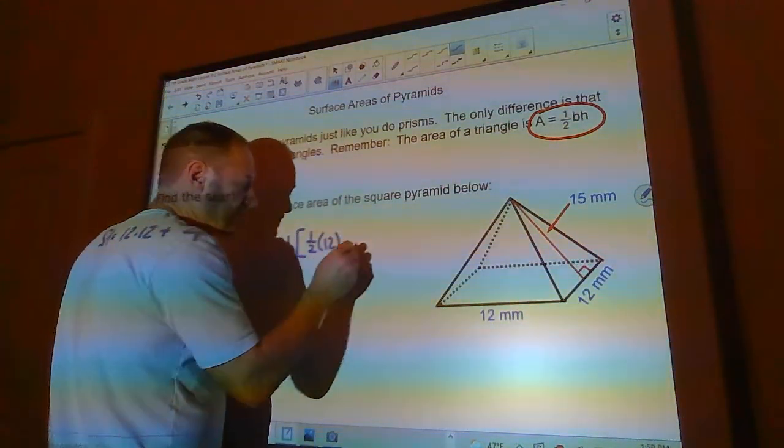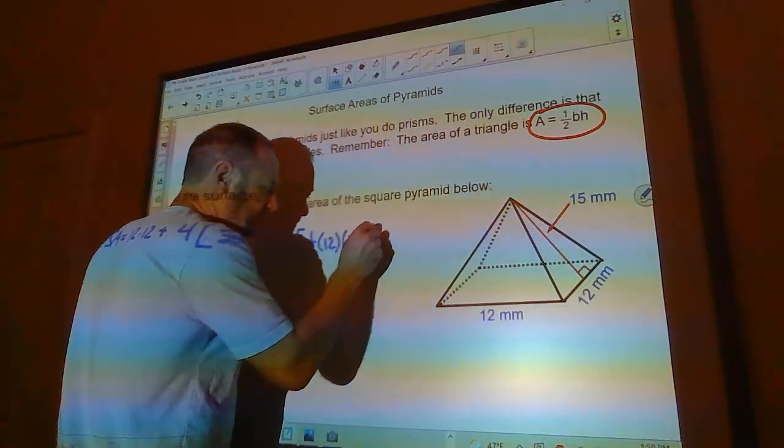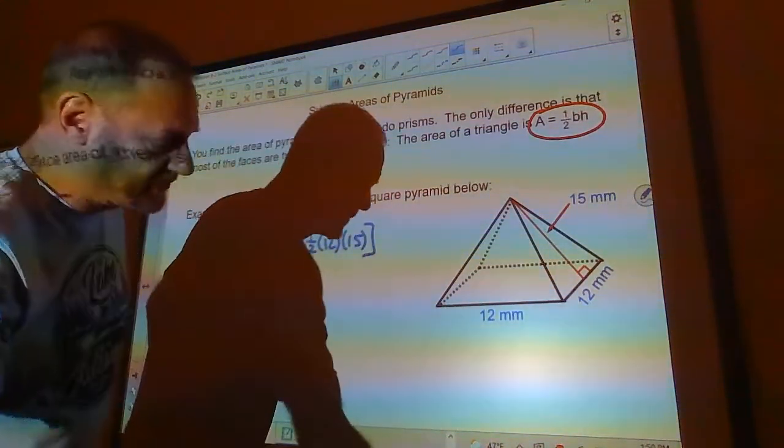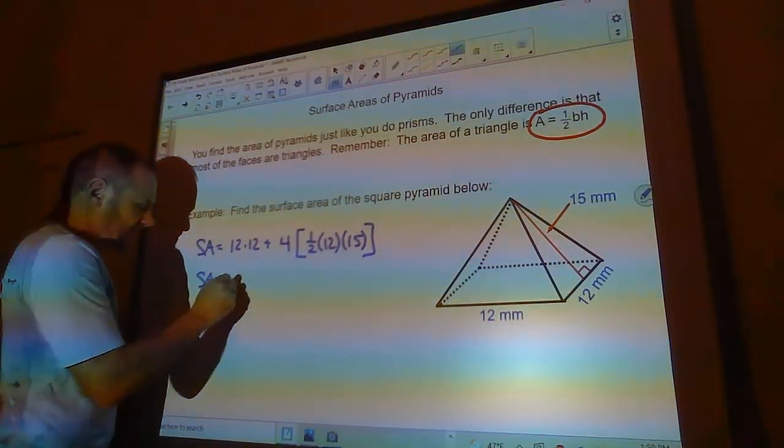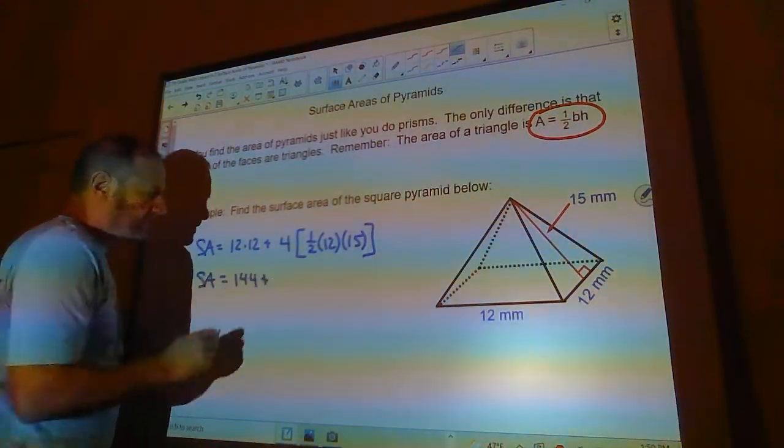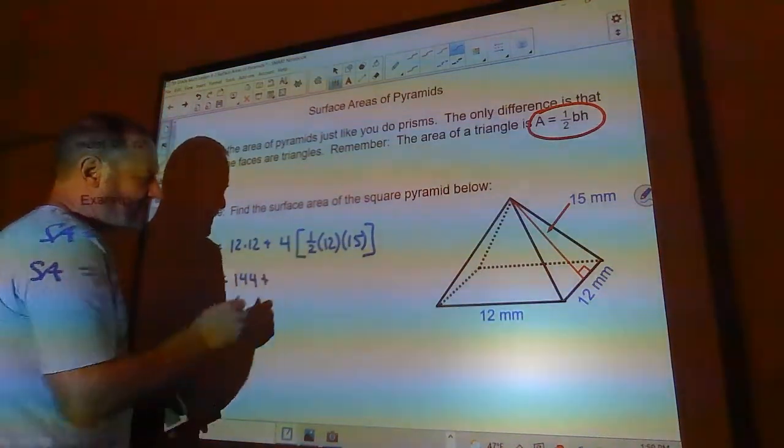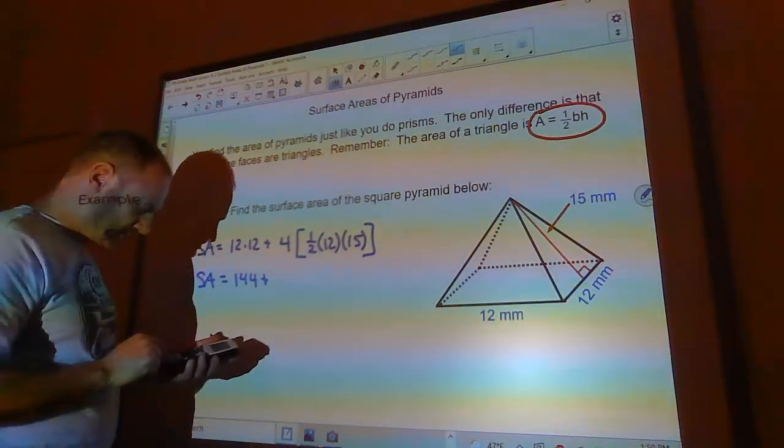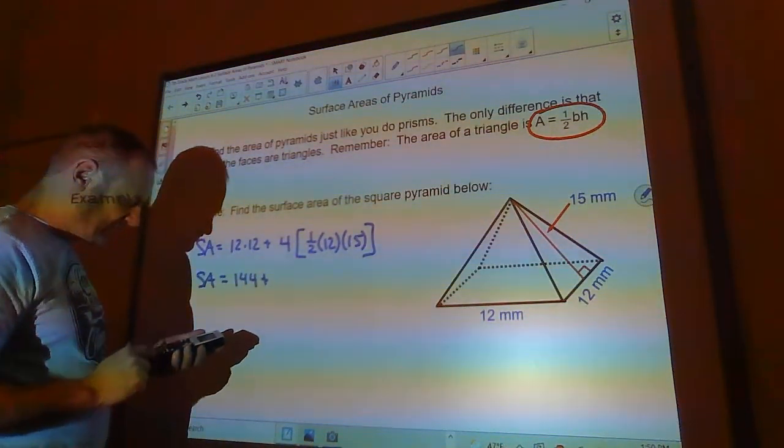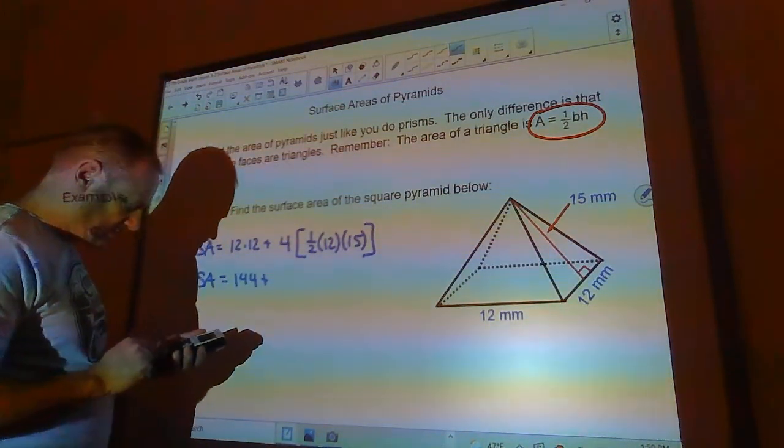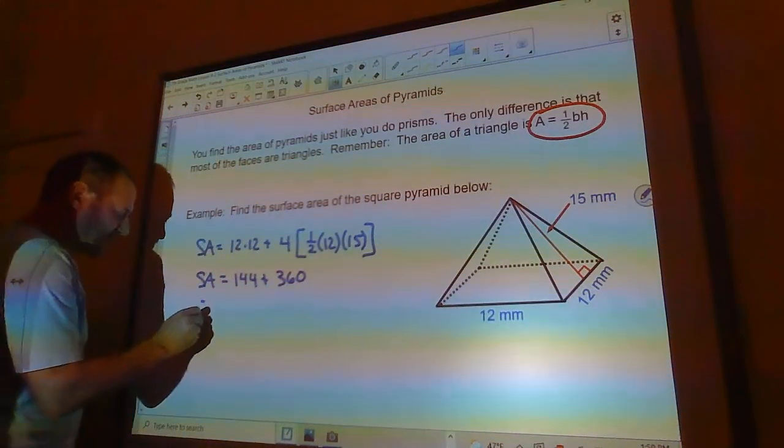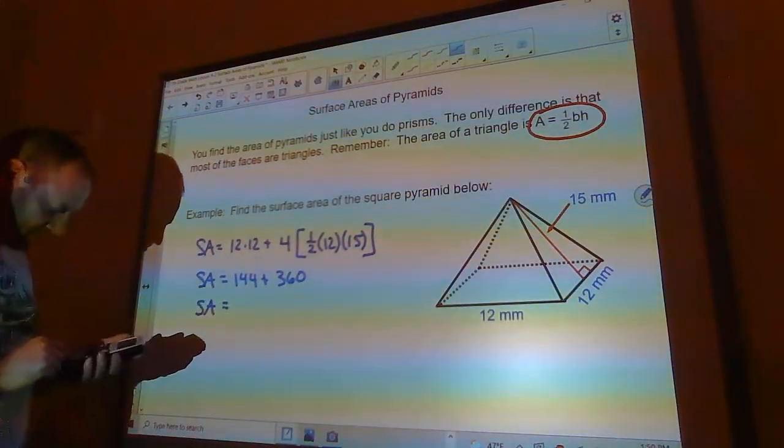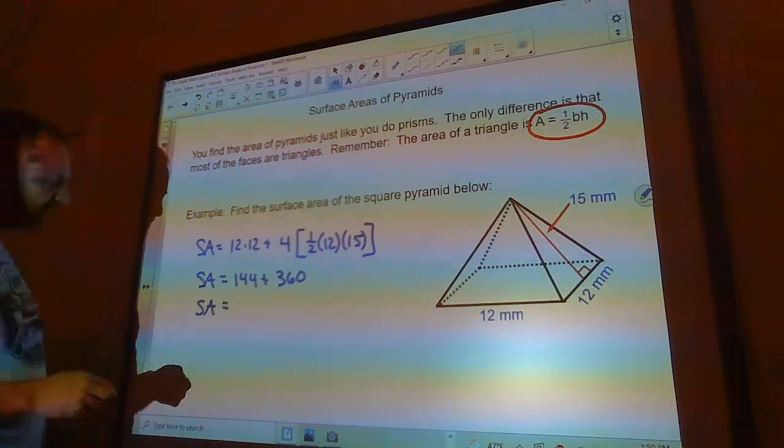So pretty simple: this is 144 plus four times a half is 2, 2 times 12 is 24, 24 times 15 is 360. So we add those two together and we get 504, and that's in square millimeters.